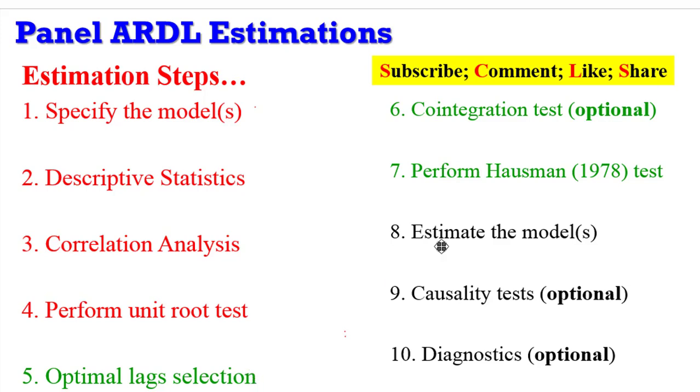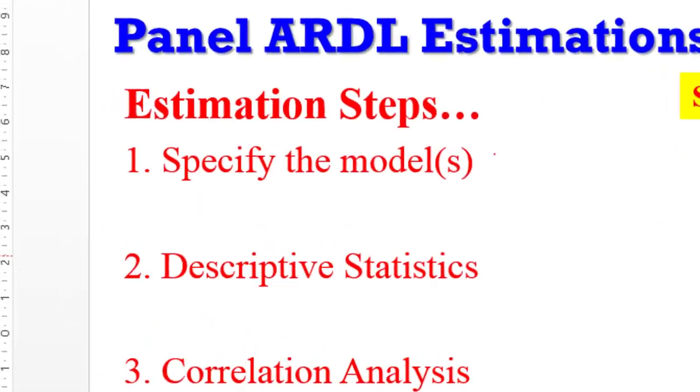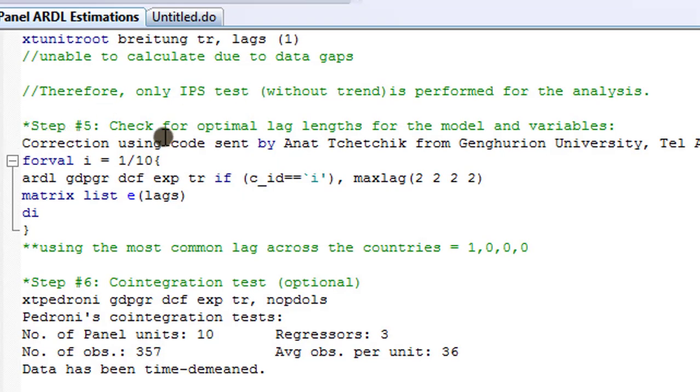Step six, even though optional, I will show you how to perform the Pedroni co-integration test, and lastly we'll cover the Hausman test. For step five, we're going to check for the optimal lag length for the model and variables. The code I'm using was sent to me by Anna Tchetchik from Genghurion University in Tel Aviv. She was gracious enough to forward this code to me and I've made it available to many people who need it, and it's also on my website.